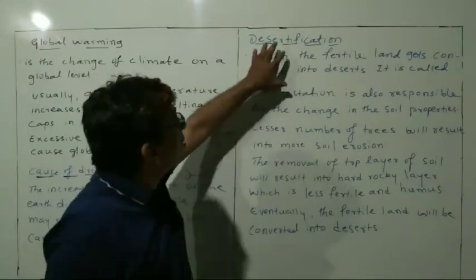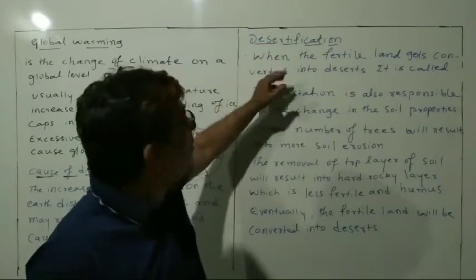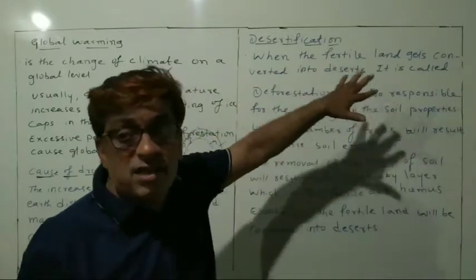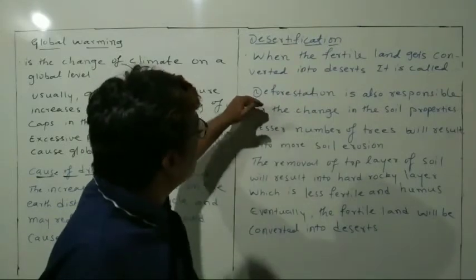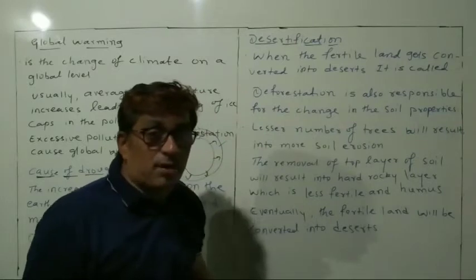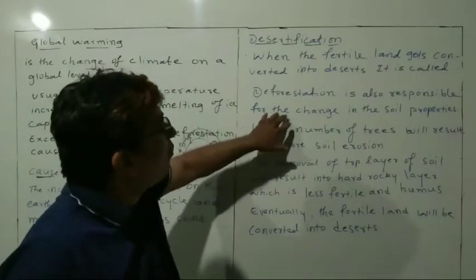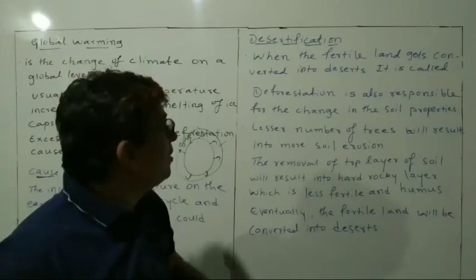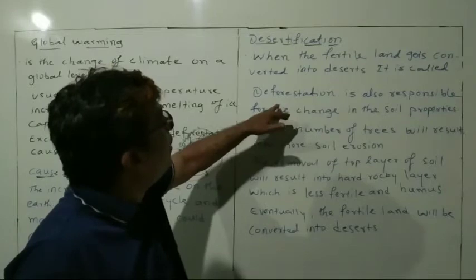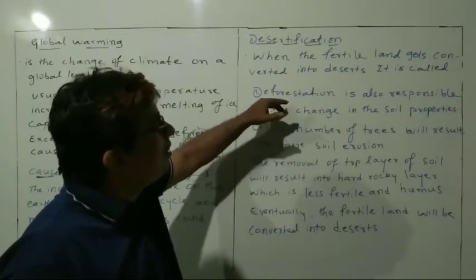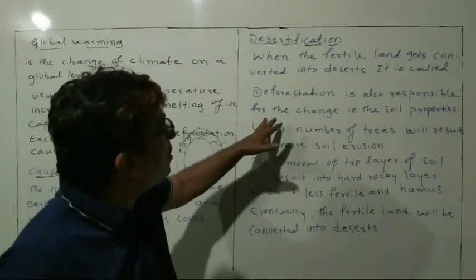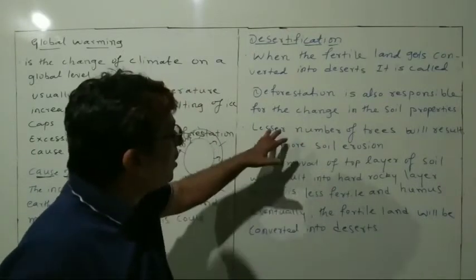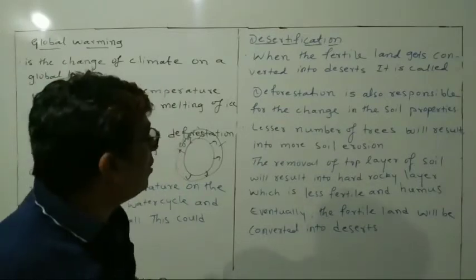This is a very important definition: when the fertile lands get converted into deserts, this is called desertification. Deforestation is also responsible for the change in soil properties — soil texture will also be changing. A lesser number of trees will result in more soil erosion, which affects the soil.